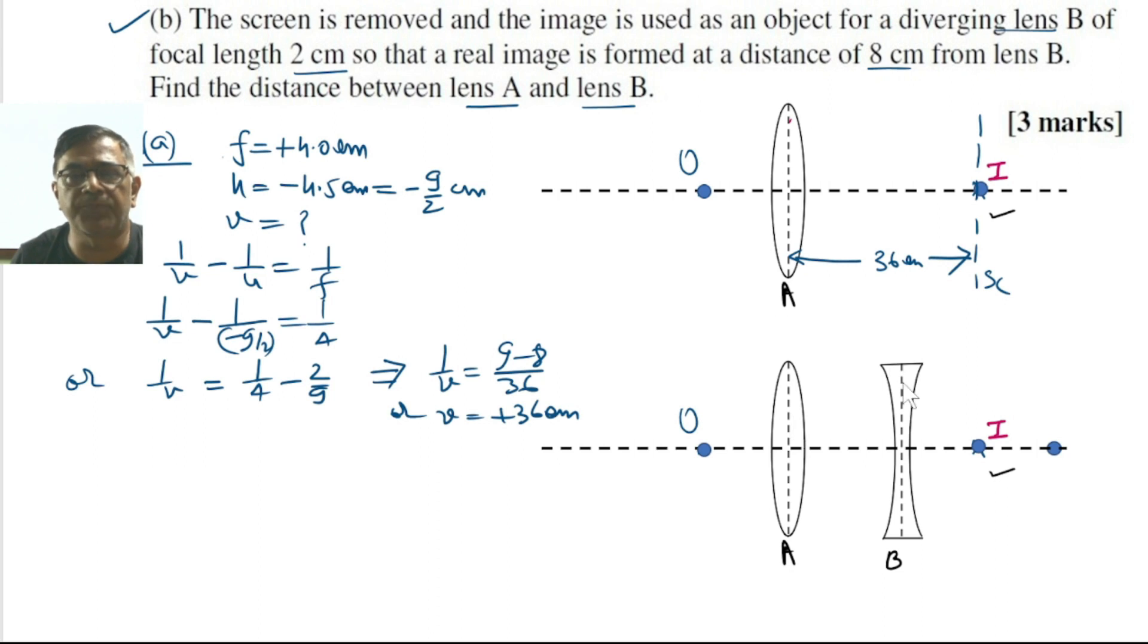Let us assume this diverging lens is placed at a distance X from I, where I acts as an object for this lens. And this I dash happens to be the final position of the image. So for this diverging lens, I is the object and I dash is the final image.